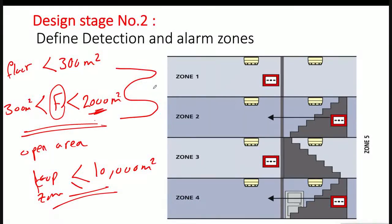In that case, you add multiple loops to cover the floor. What is not recommended is to divide a loop or zone between two floors.